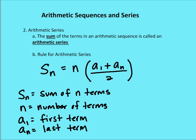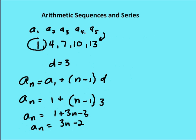A series is the sum of the terms in an arithmetic sequence. So if we go back to our original problem here, we had a sequence 1, 4, 7, 10, and 13. That was my sequence. My series is 1 plus 4 plus 7 plus 10 plus 13.